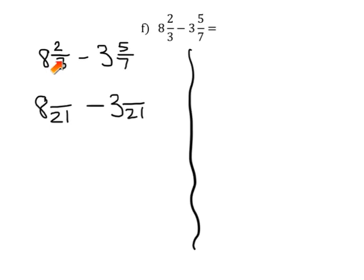So we know we're going to rename both of these fractions so they have 21 as their denominator. So how do you turn thirds into 21sts? Times by 7, which means you times the 2 by 7, and you get 14. And then, how do you turn sevenths into 21sts? You multiply by 3, which means we multiply the numerator by 3, which gives us 15.